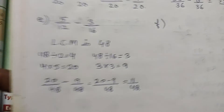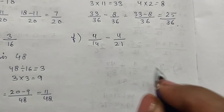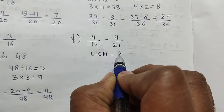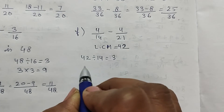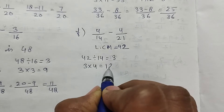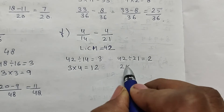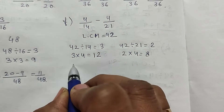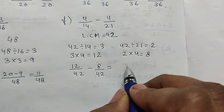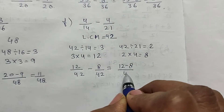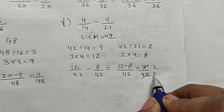Part f: 4/14 minus 4/21. The LCM is 42. 42 divided by 14 is 3, and 3 into 4 is 12. 42 divided by 21 is 2, and 2 into 4 is 8. So the new fractions are 12/42 minus 8/42, which equals 4/42. Simplifying by dividing by 2: the answer is 2/21.